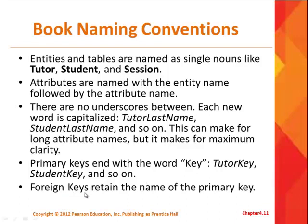It says the foreign key retains the same name as the primary key, and that is a good idea. You'll see some databases where the foreign key name is changed slightly, and I think that's confusing. I believe the foreign key should retain the name of the primary key — remember, that's the field that links the two tables together to form a relationship.